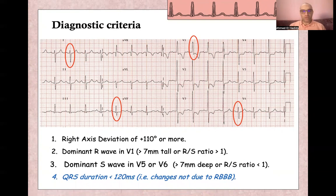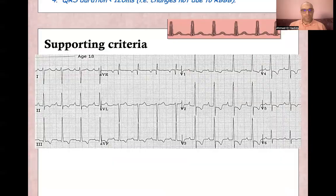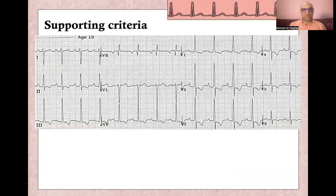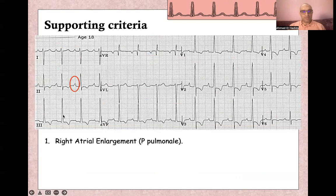Because if there is a wide QRS complex, these changes may be due to right bundle branch block. Other supporting criteria for right ventricular hypertrophy is right atrial enlargement, or P-pulmonale, which can be seen in lead two or in lead V1.